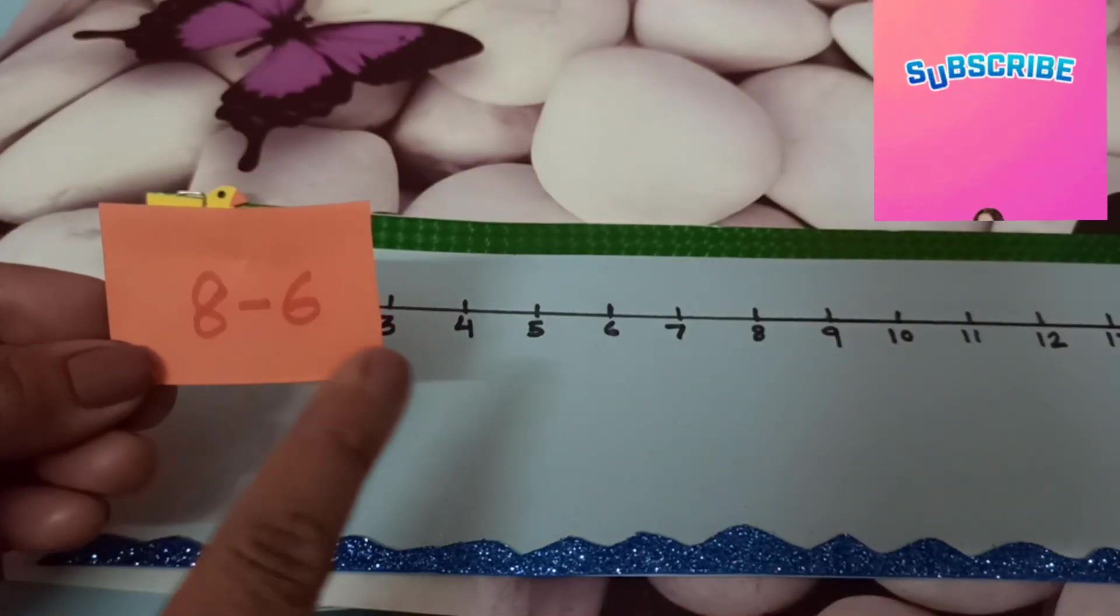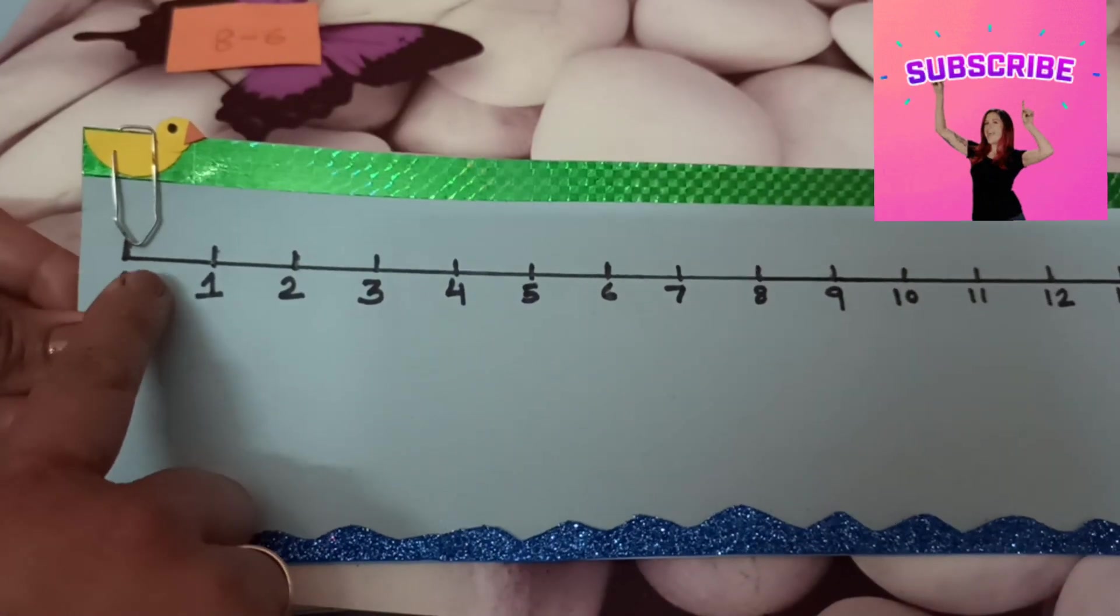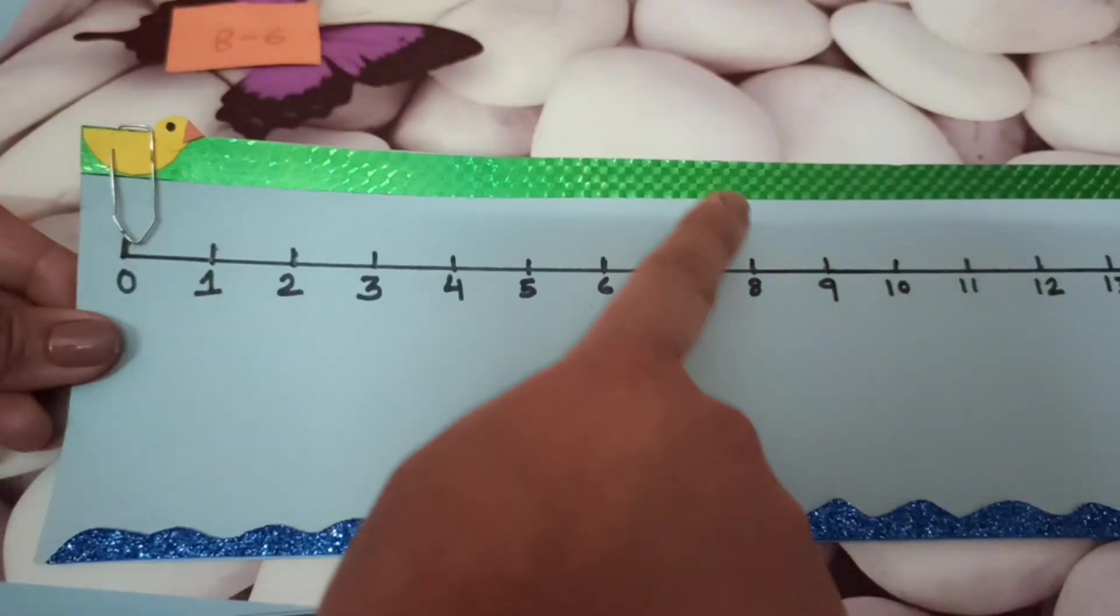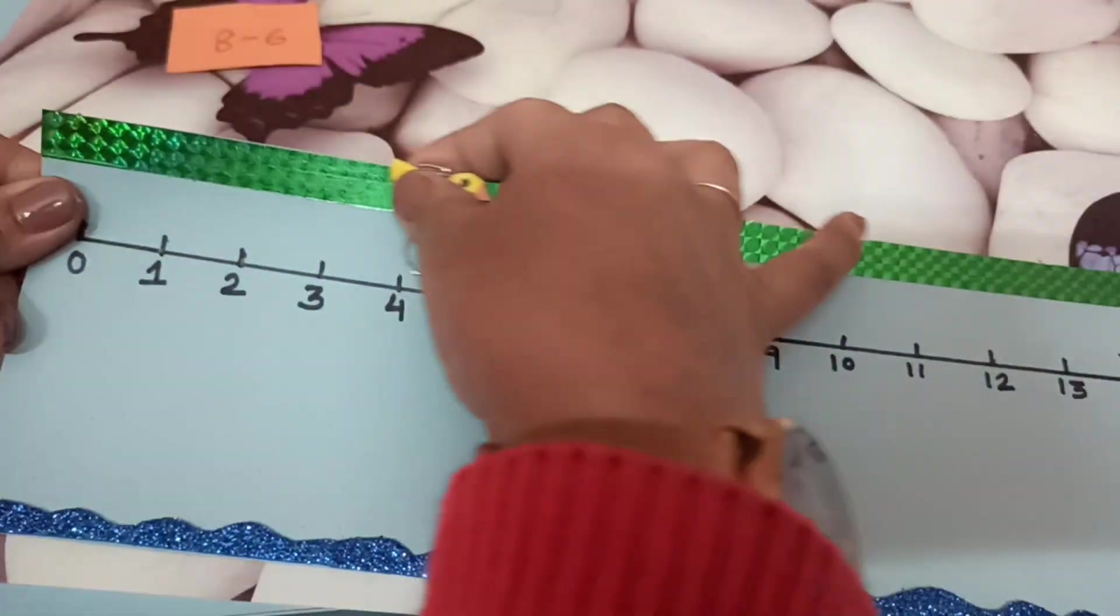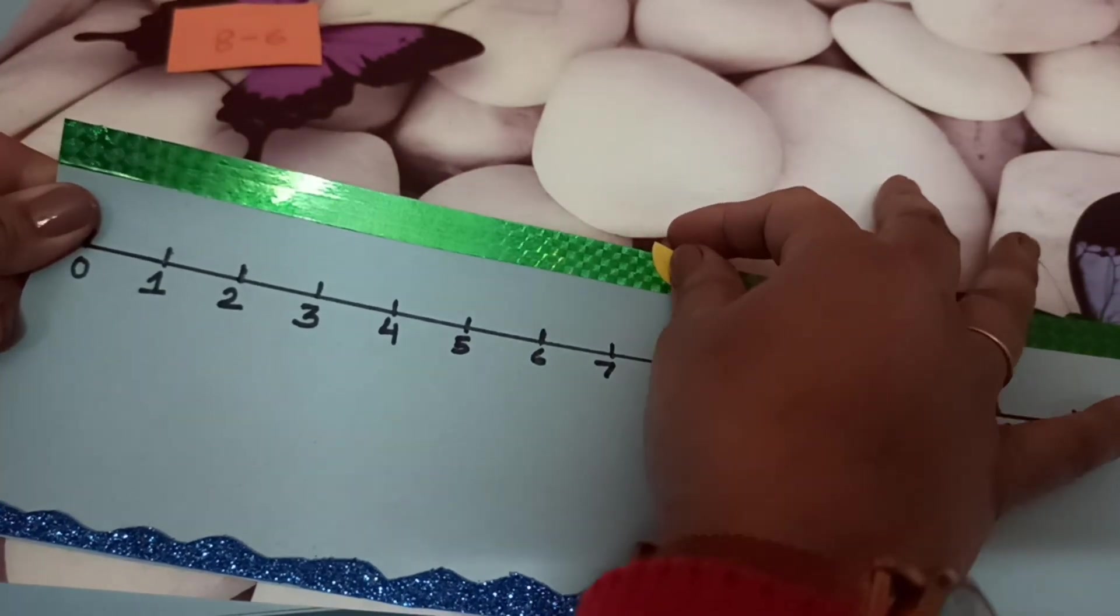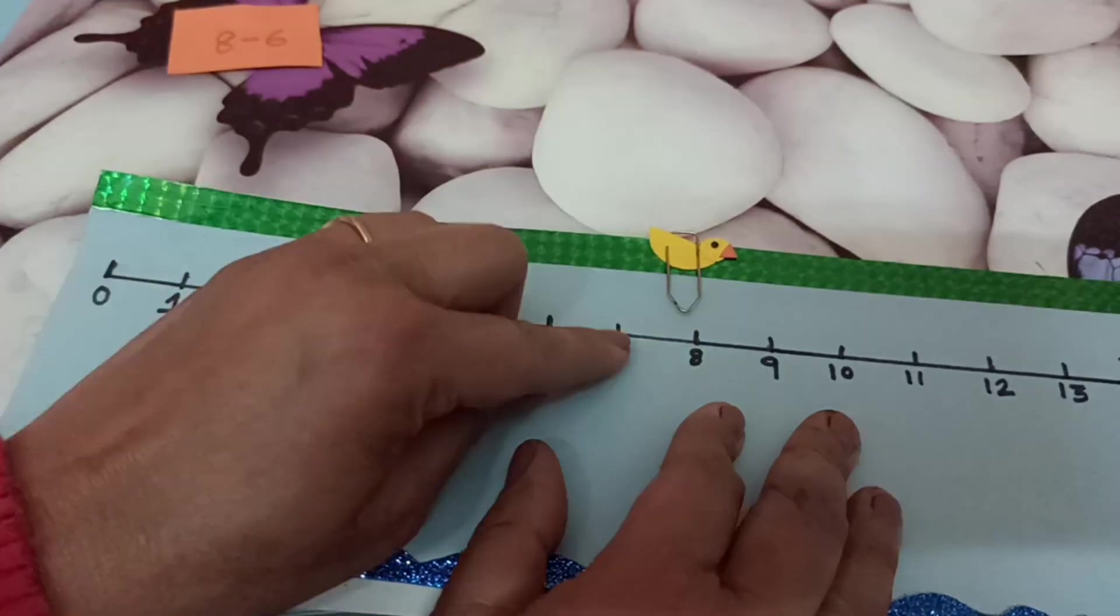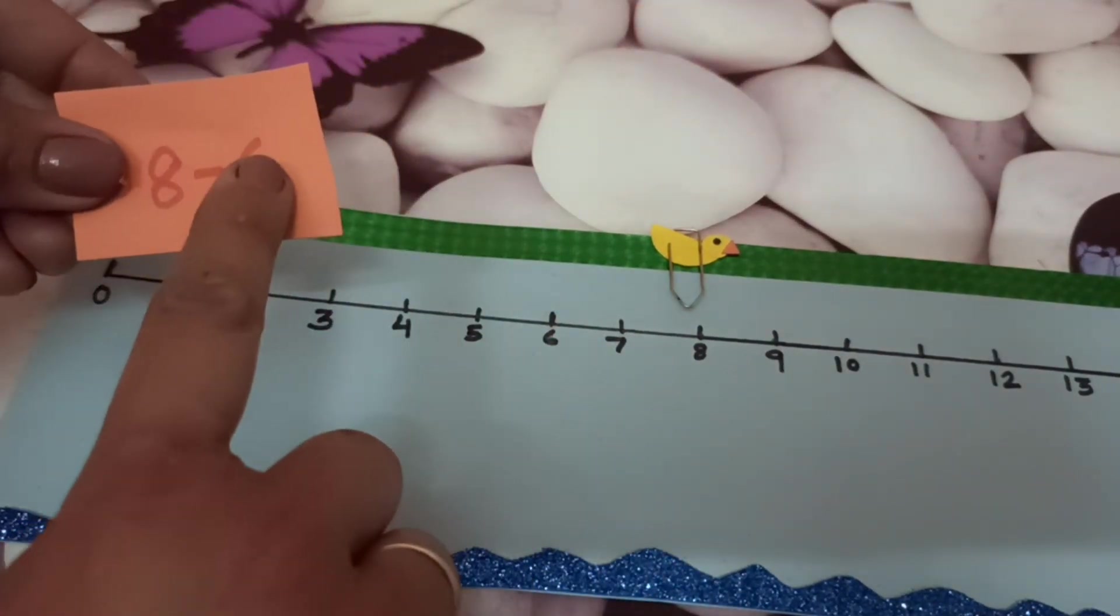Let's do 8 minus 6 on the same number line. The duck is on number 0 which is the starting point. The duck will take a direct jump on number 8 and will move 6 steps backward. We have slid the duck and it's on number 8. Now it will take 6 steps backward.